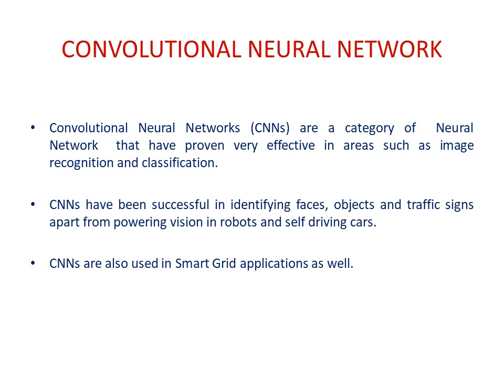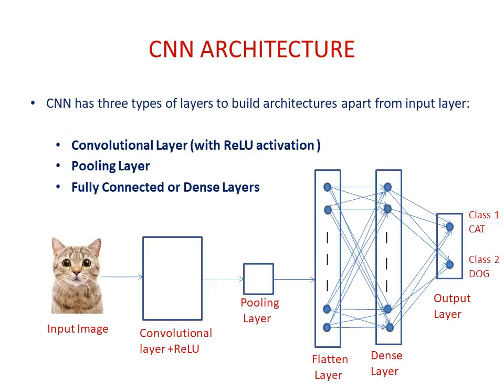Convolutional neural networks are also used in smart grid applications recently, since smart grids generate a huge amount of data. The CNN architecture has three different layers: namely the convolutional layer with RELU activation, the pooling layer, and the fully connected or dense layer.